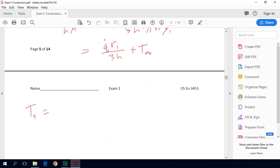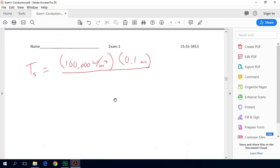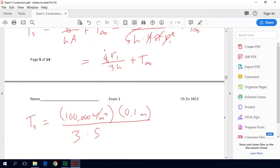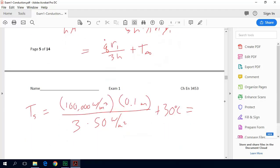Now we can just plug our numbers in. So Ts equals 100,000 watts per cubic meter. I did that conversion from 100 kilowatts per cubic meter. Times our R₁, which is 0.1 meters. I did the conversion because the problem statement told us the radius was 10 centimeters. We just need to be mindful of the units, making sure everything is consistent. Divided by 3, times our H, 50 watts per meter squared, plus 30 degrees C, which is our T∞.